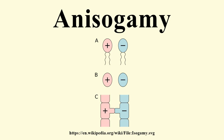There are several types of anisogamy. Both gametes may be flagellated and thus motile. Alternatively, neither of the gametes may be flagellated; this situation occurs, for example, in some algae and plants. In the red alga Polysiphonia, large non-motile egg cells are fertilized by small, non-motile spermatia.